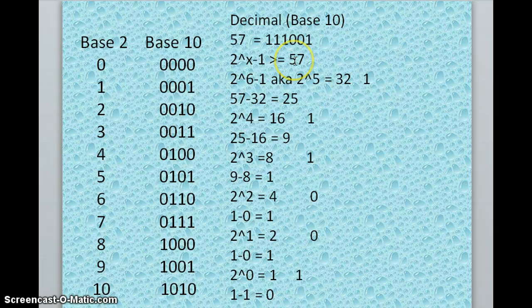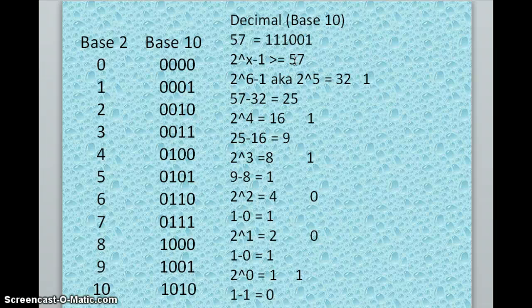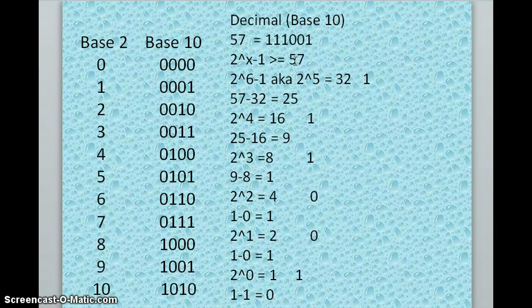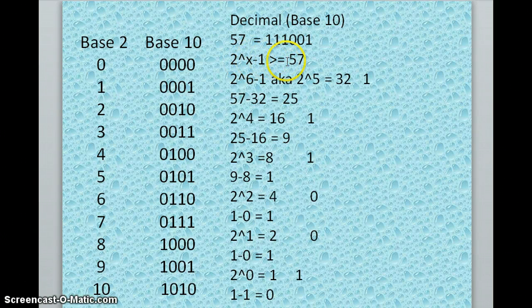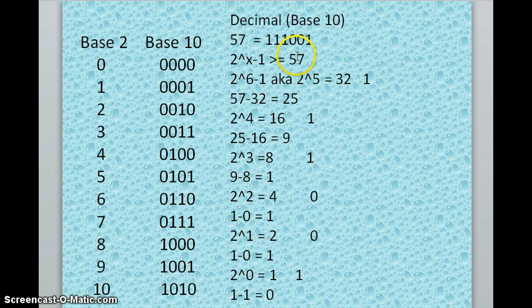In this one, it would be 2 to the 6th because we would say, go about guessing. 2 to the 4th is 16, so no. 2 to the 5th is 32, so no. 2 to the 6th is 64. Oh, there we go. So the first power we arrive at that's greater than or equal to this number, we're going to use it.